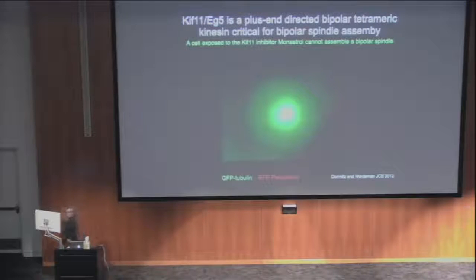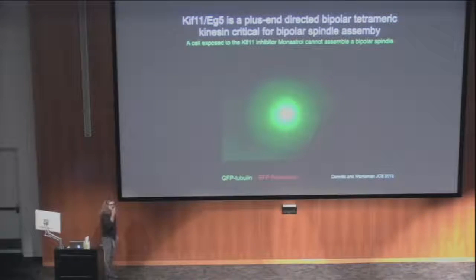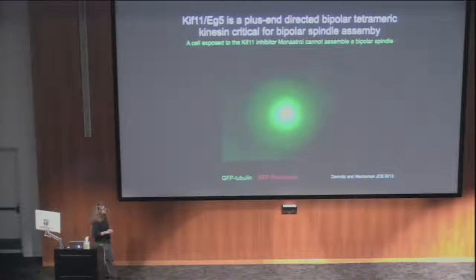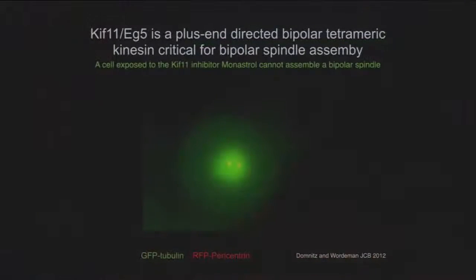This particular kinesin has been studied for quite some time and we have drugs that can selectively inhibit it. There's one drug called monasterol. If you put cells in monasterol — this is a cell in monasterol right now, microtubules in green and pericentrin labeling the centrosomes — the cell can't separate its centrosomes. But the great thing about monasterol is it's reversible: you can wash it out, and as soon as you do, the cell will assemble a nice bipolar spindle.